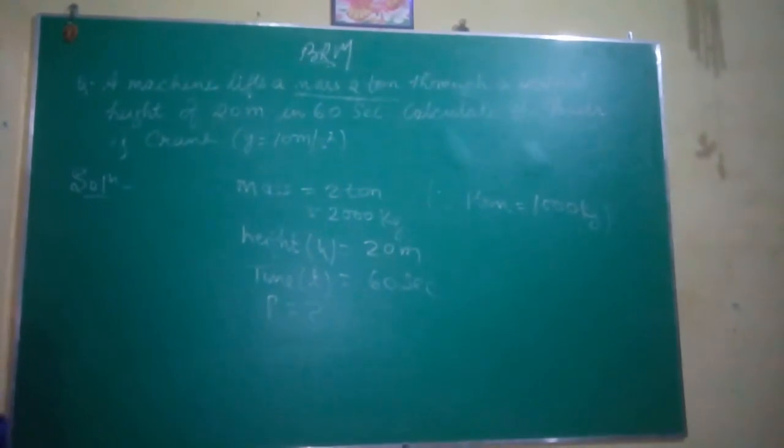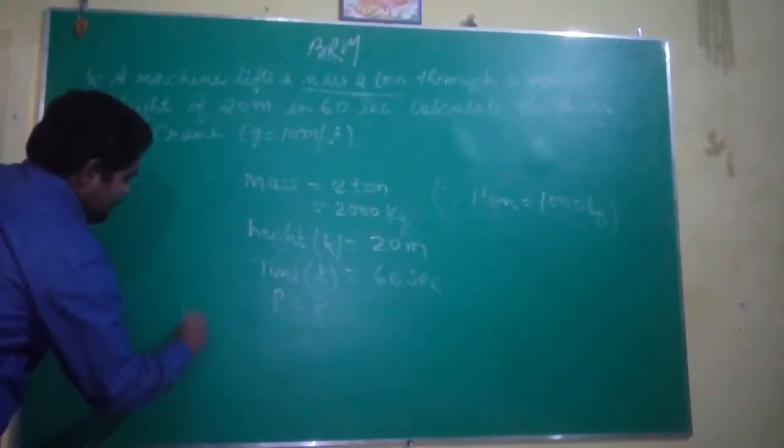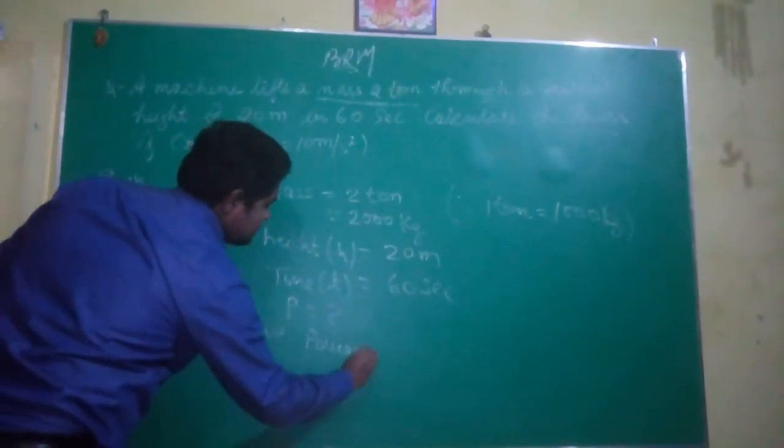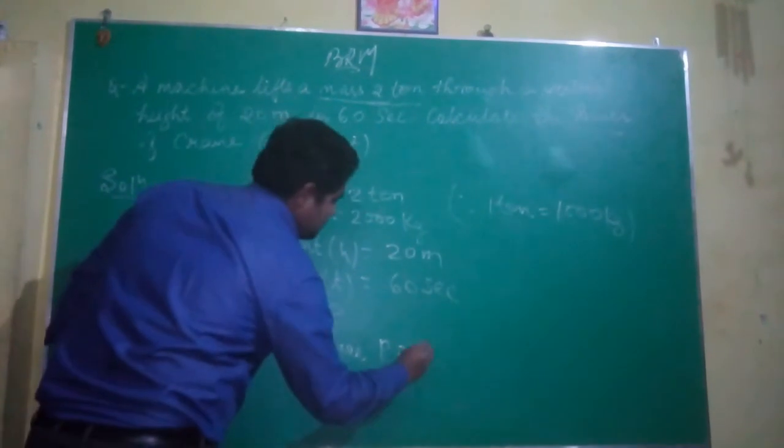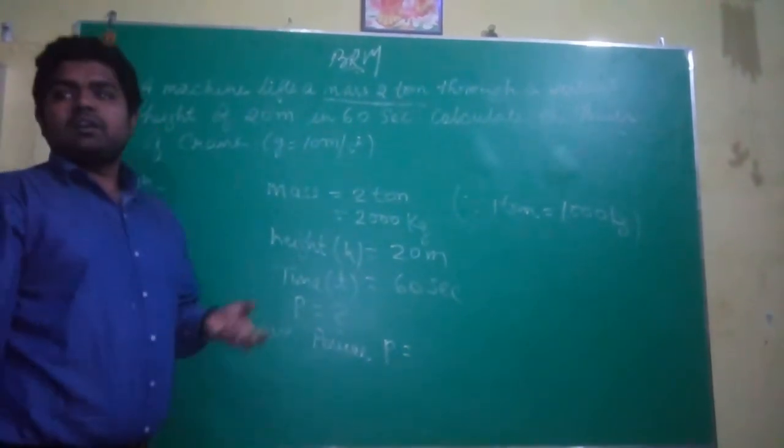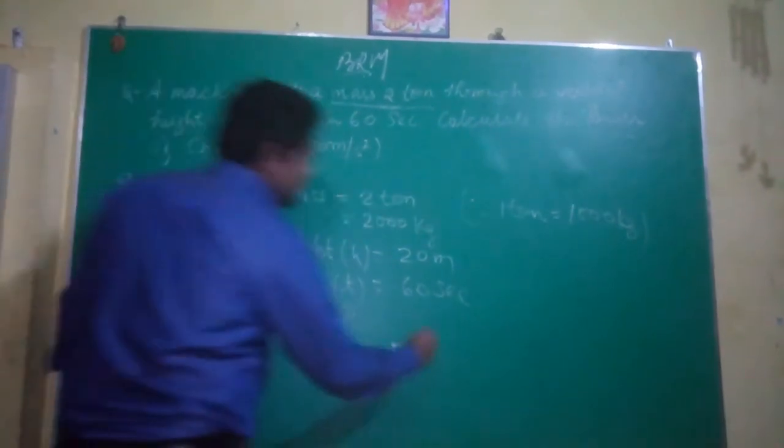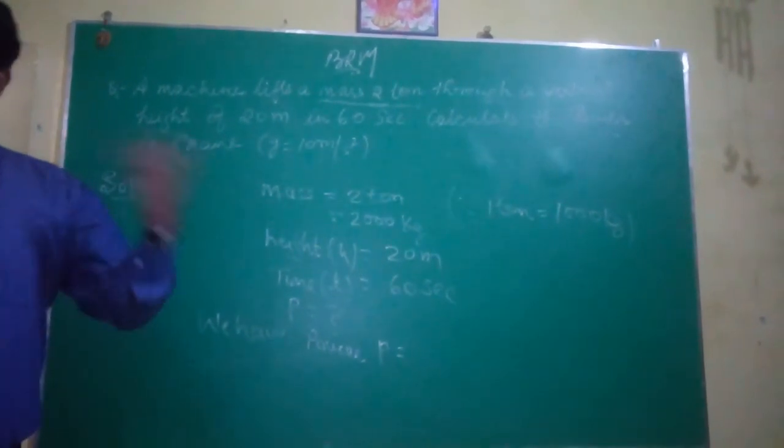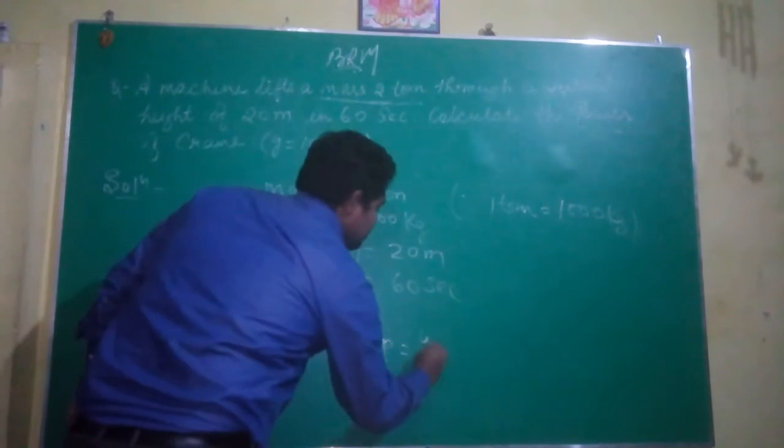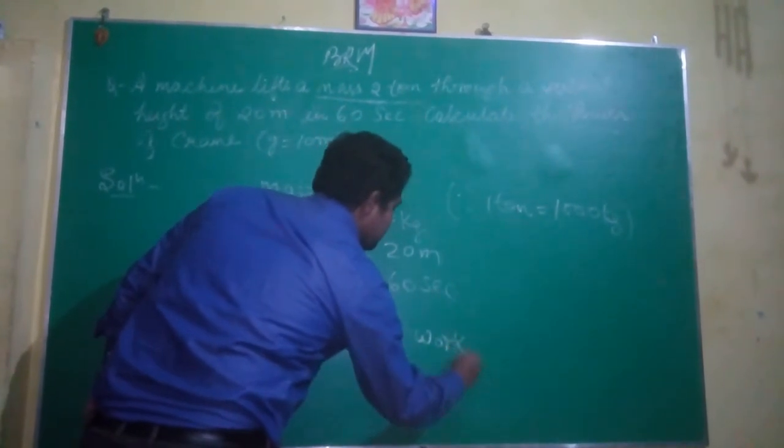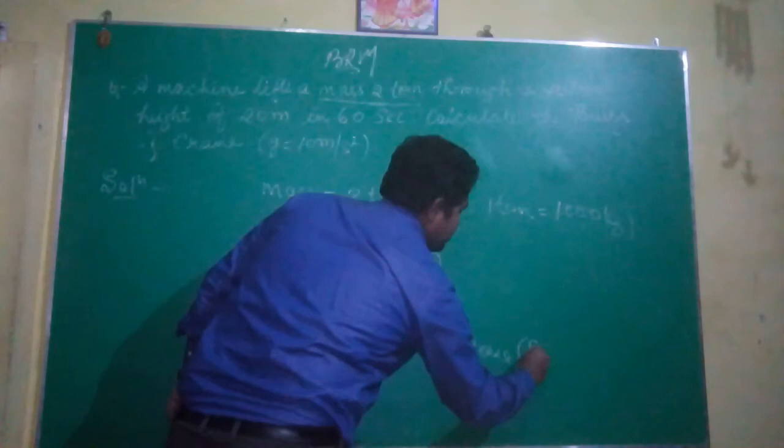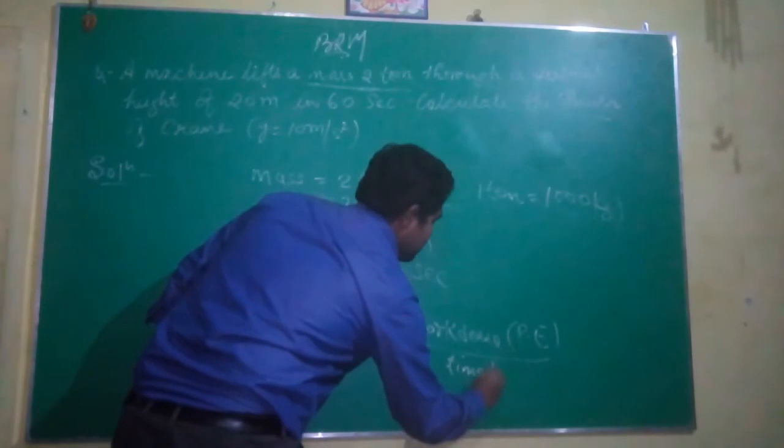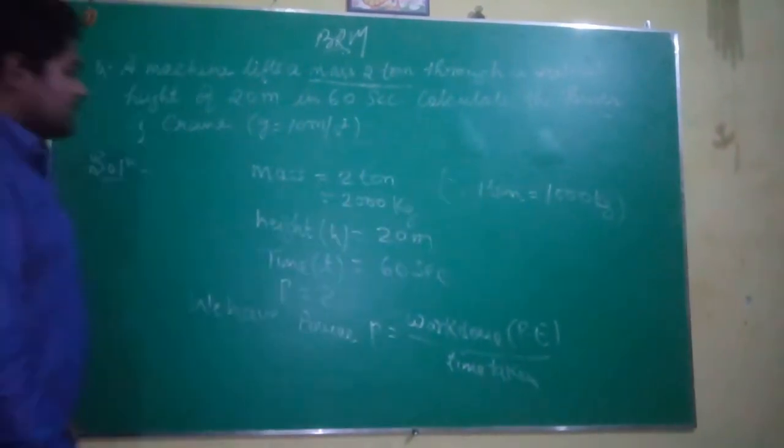We have the relation of power. Power P equals work done upon T, or energy upon T. Because we are lifting the body, the work we are doing will convert into potential energy. So work done, which is potential energy, upon time taken - that is the relation.